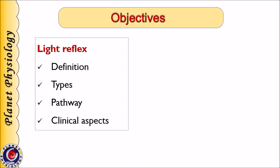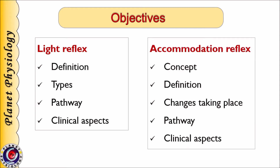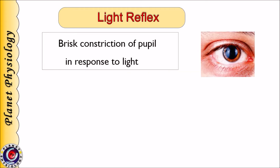Light reflex will be dealt under the following headings: types of light reflex, pathway for light reflex, and clinical aspects associated with light reflex. To study accommodation reflex, first we shall study the concept of accommodation, then its definition, changes taking place in the eye during accommodation, its pathway, and clinical aspects. Let us begin with light reflex. It is defined as brisk constriction of pupil in response to light.